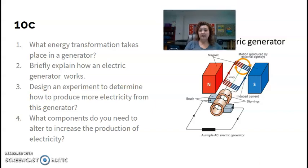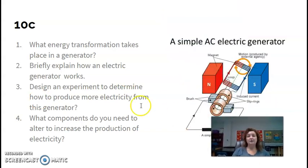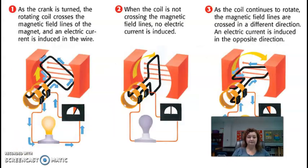Now we're going to talk about a generator. So again, it's like, what in the world is a generator? Let's talk about that first before we go and answer these questions. So we're going to start by looking at this. It says, as a crank is turned, the rotating coil crosses the magnetic field lines of the magnet and an electric current is induced in the wire. So it just means it starts like the electric current is just starting guys in the wire.